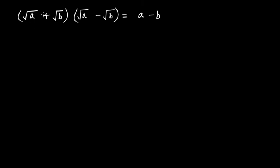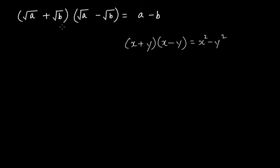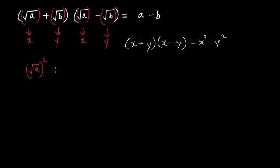Here we have: square root of a plus square root of b, multiplied by square root of a minus square root of b, and this is equal to a minus b. This is related to the identity x plus y multiplied by x minus y equals x squared minus y squared, which we learned in grade 8. If you take square root of a as x and square root of b as y, then x squared means square root of a squared.